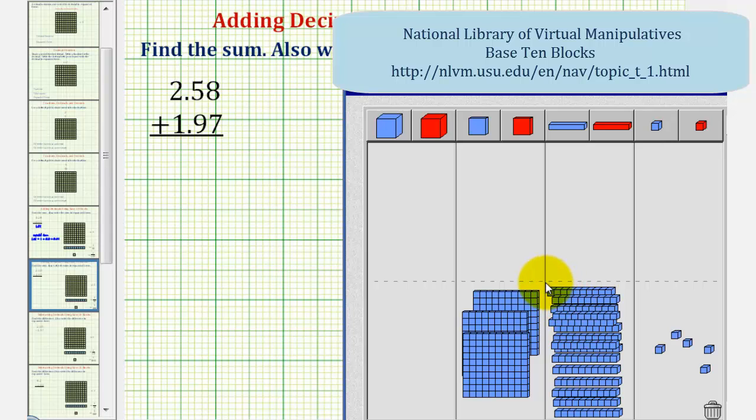So now we'll perform another exchange. Again, we'll exchange ten longs for one flat. We'll move this flat over to the ones place value.